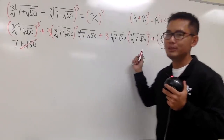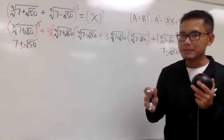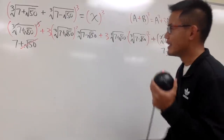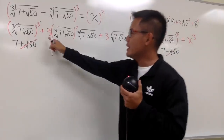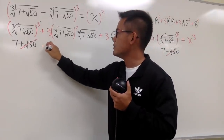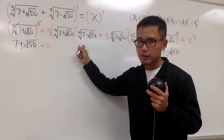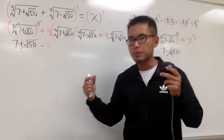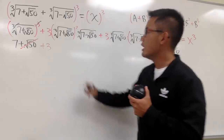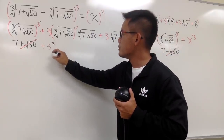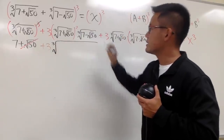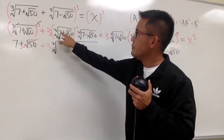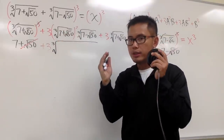Unfortunately, we still have the middle terms, but it's okay. For the middle terms, we have plus 3 times a big cube root. Here we have a cube root and likewise another cube root, so we can multiply the things inside the cube roots together. Let me write down the cube root together. We see that one factor is being squared — meaning we have (7 + √50) squared inside.